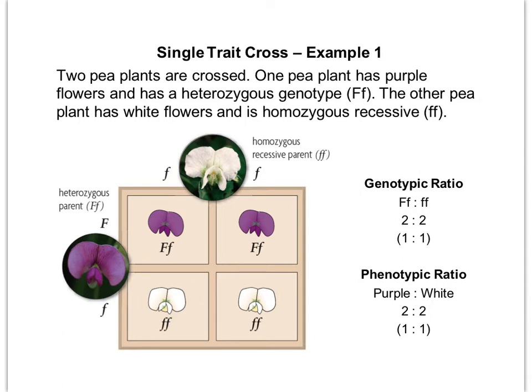Then we're going to look at the phenotypic ratio, which is looking at what traits are actually showing. We can see that it's actually the same as the genotypic ratio — it's two purples to two whites.